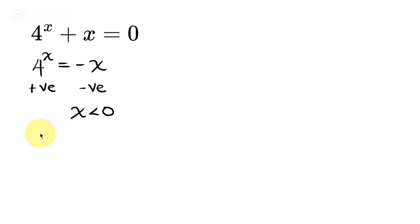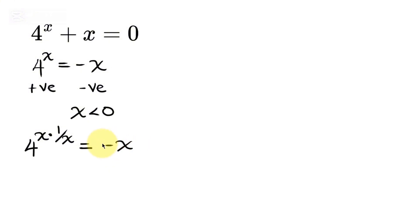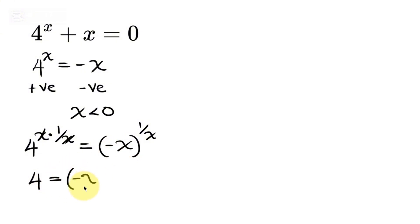Now let's separate the variables by multiplying the exponent on the left and on the right by 1 over x. On the left we have 4 to the power of x, so we multiply the exponent by 1 over x. On the right we have negative x, and we also multiply the exponent by 1 over x. This x and this x cancel out, leaving 4 equal to negative x raised to the power of 1 over x.